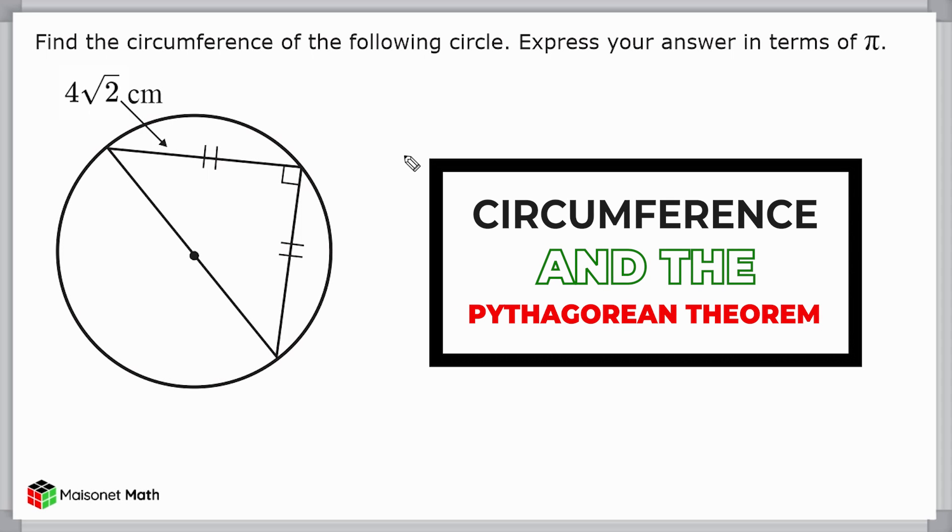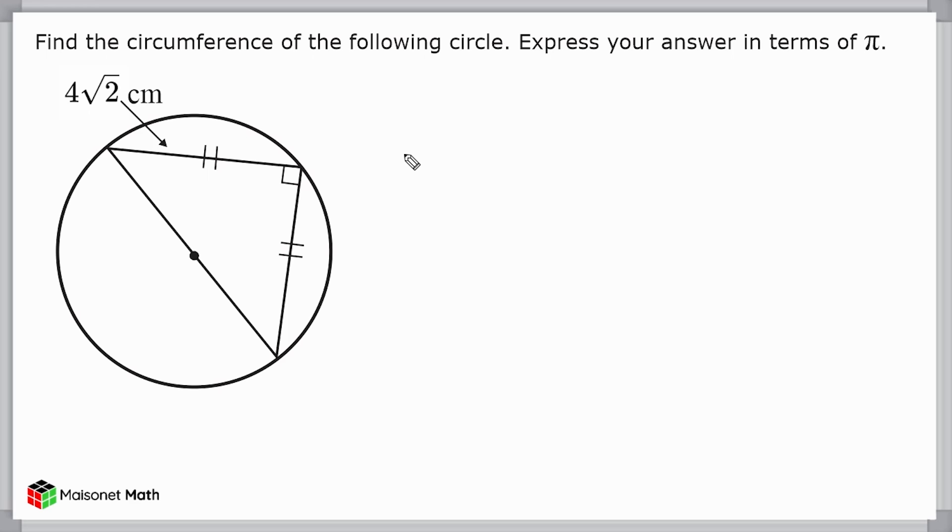Hey, this is Mr. Masonette, and what we're going to do in this video is find the circumference of a circle when the diameter length is not given, and we have to use the Pythagorean theorem to determine what that diameter length actually is.